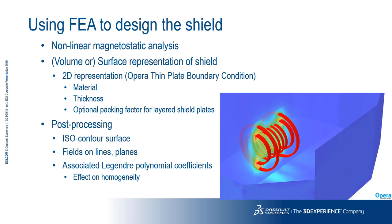Today we're looking at finite element analysis in the design process and in particular our software Opera. If we're looking at the design of the base DC magnet or the shielding for it, then we need to use a magnetostatic solver with non-linear capabilities. In the case of Opera, this uses just one degree of freedom per node, which makes it as efficient as possible in terms of both memory usage and solution speed.